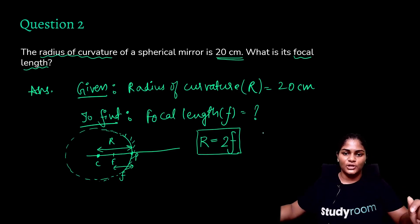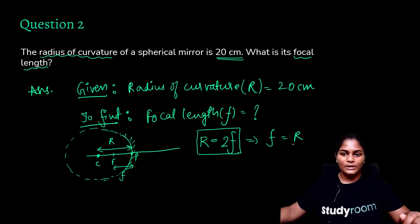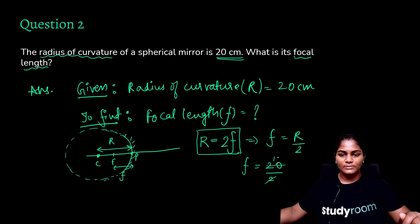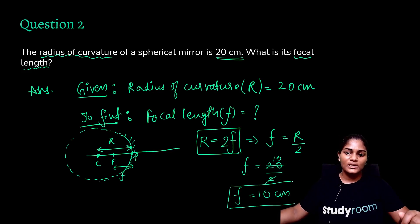We are given the radius of curvature and have to find the focal length. Using the equation f = R/2, and R is given as 20 cm, so f = 20/2 = 10 centimeters. The focal length is 10 centimeters.